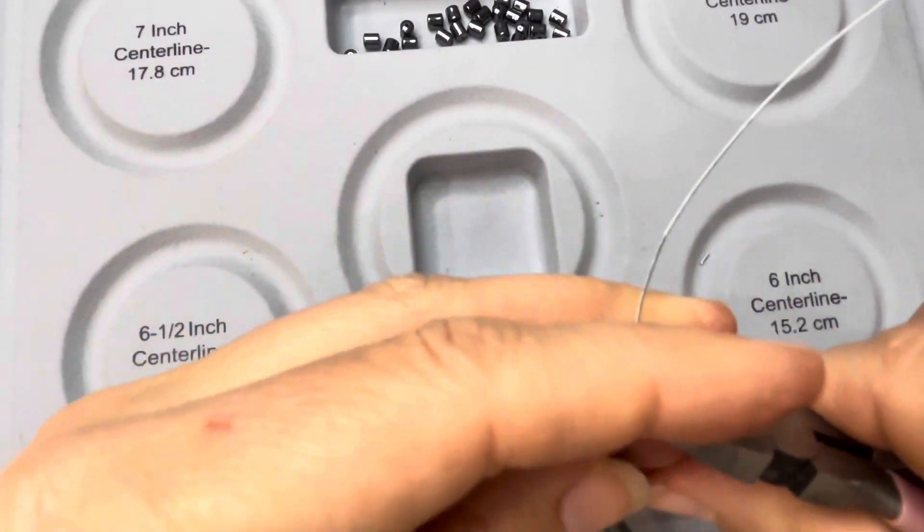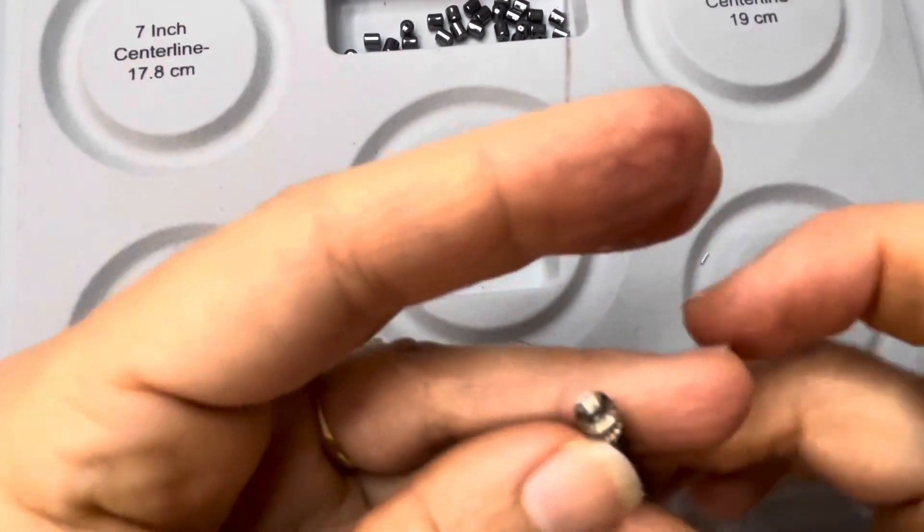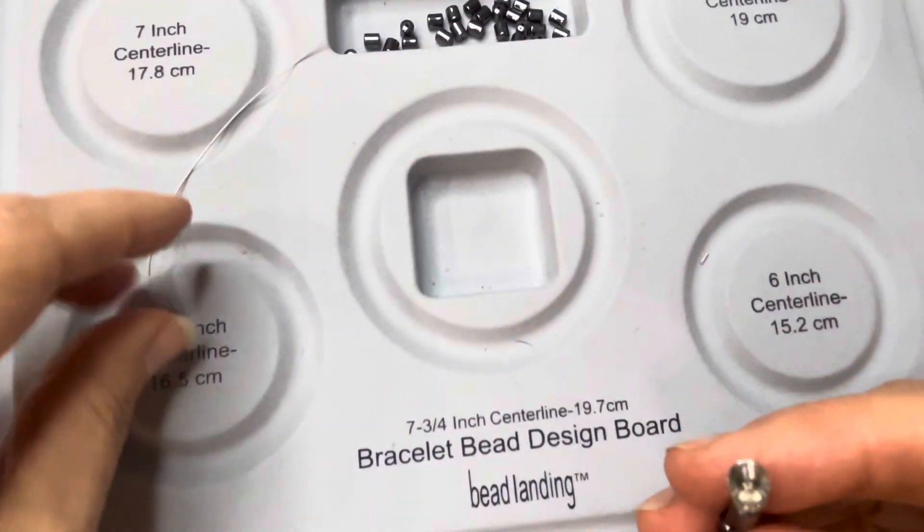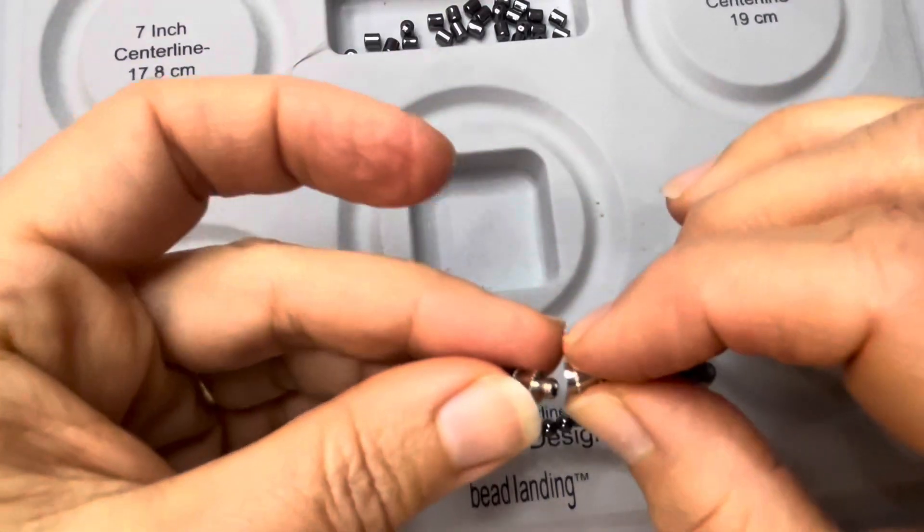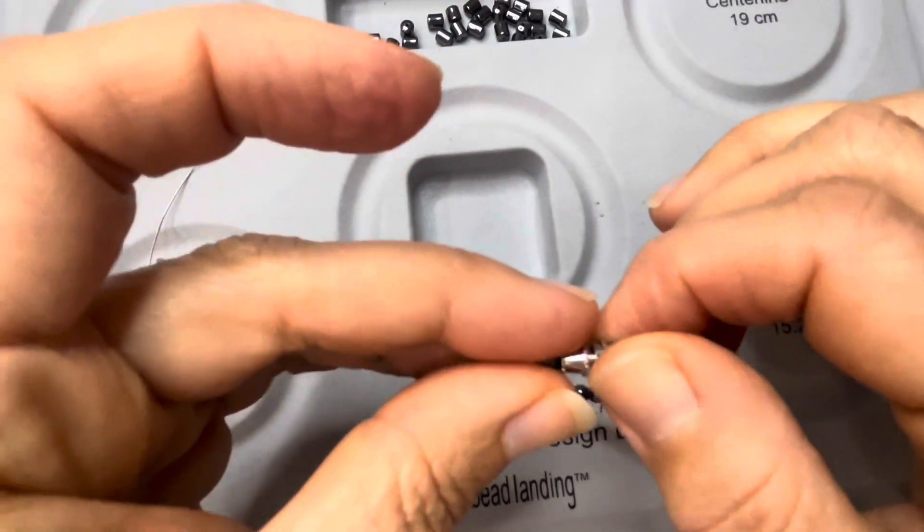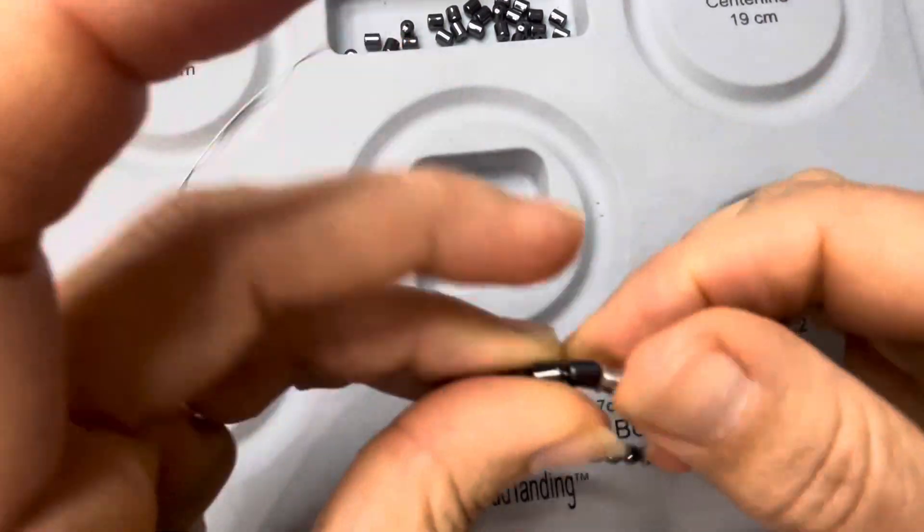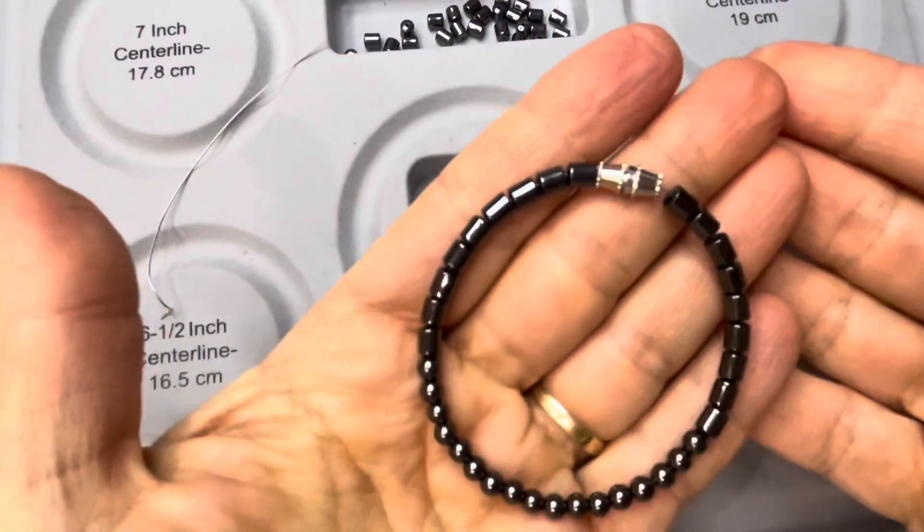Now it's just a matter of trimming the excess piece like we did the first time. There you go, you have yourself a nice tight secure clasp that will not snap on you like stretch bracelets do.